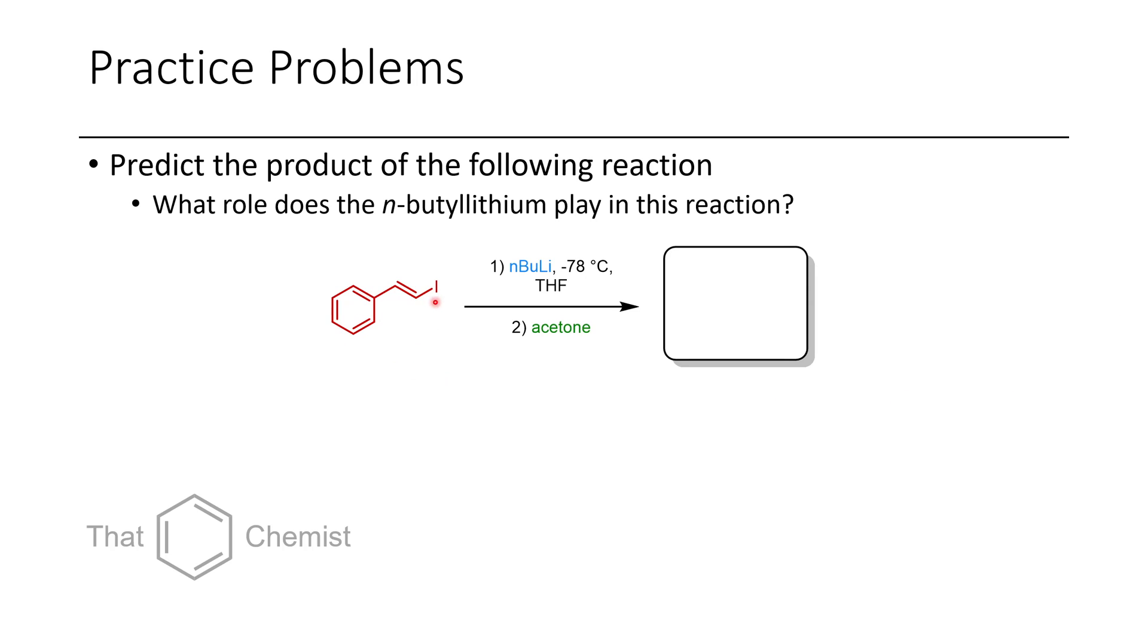So the first problem was taking this vinyl iodide, treating it with N-butyllithium, and subsequently treating it with acetone. And the question is, what role does the N-butyllithium play? If you recall from last lecture, N-butyllithium or other alkylithiums or aerolithiums can act either as a nucleophile, or as a base, or as a halogen atom abstractor, which is the same as just being a nucleophile that attacks at the halogen rather than displacing the halogen.